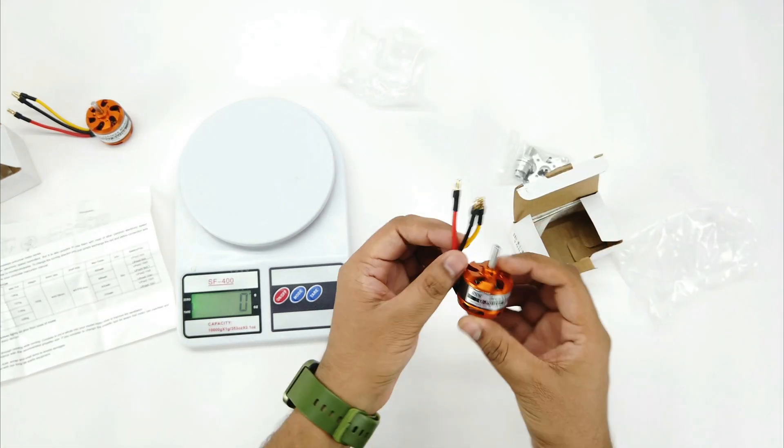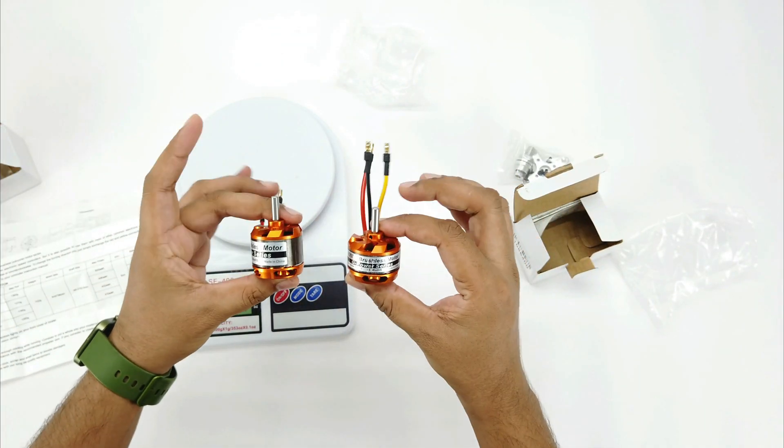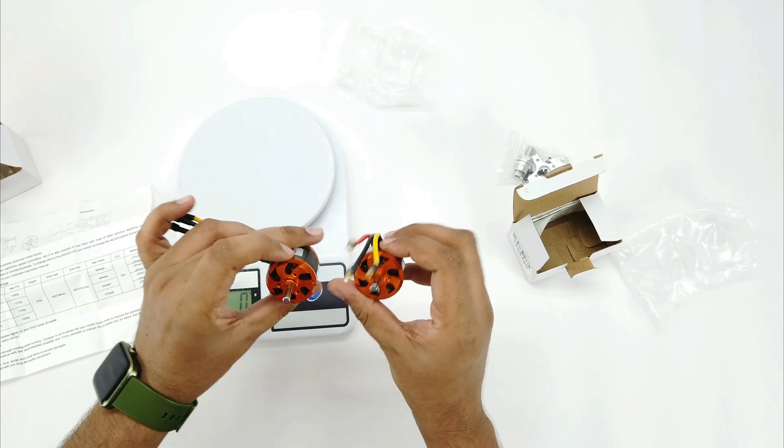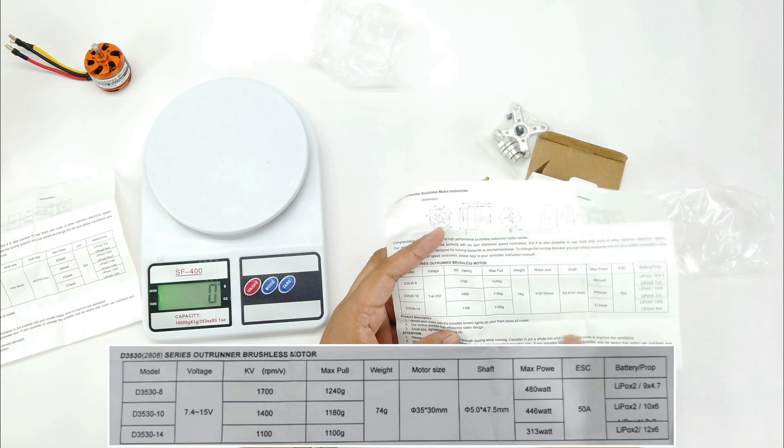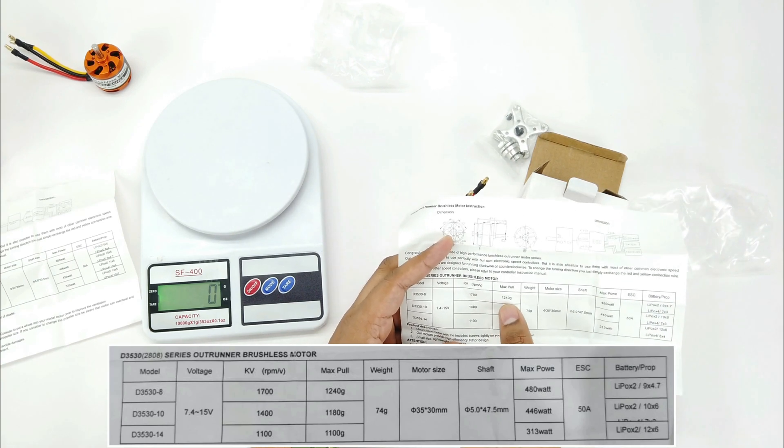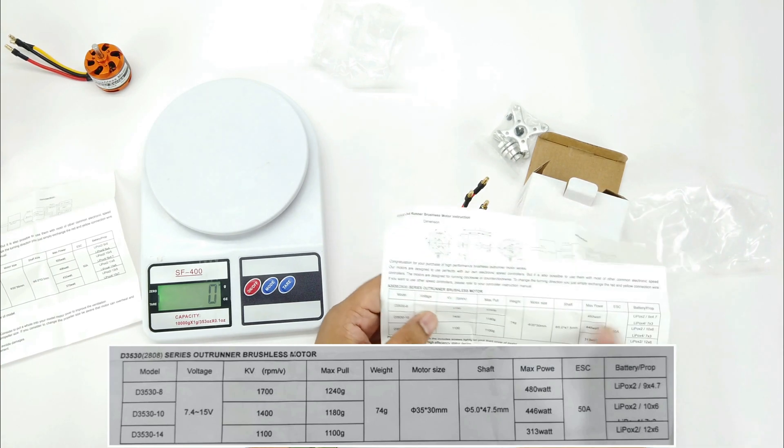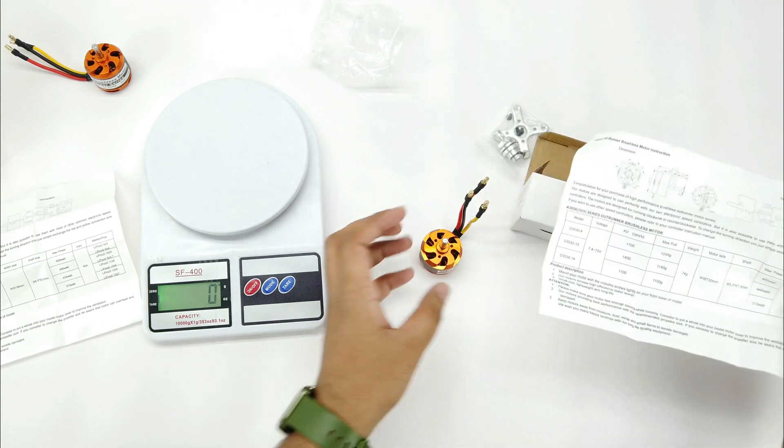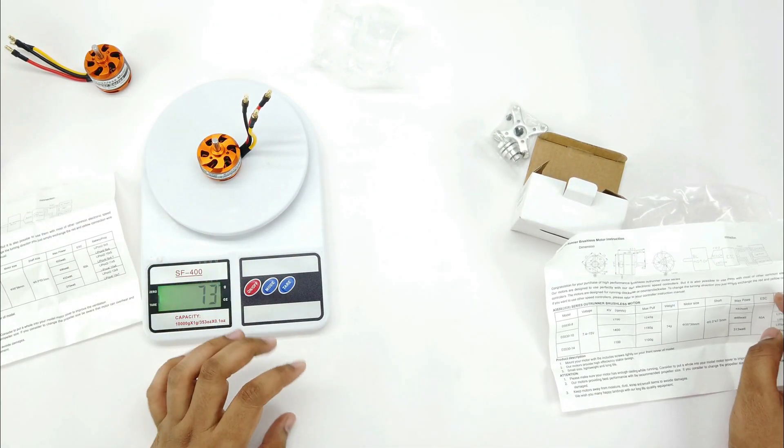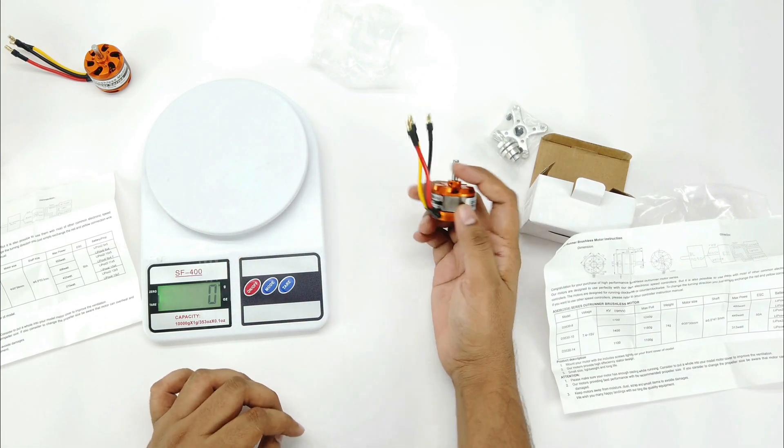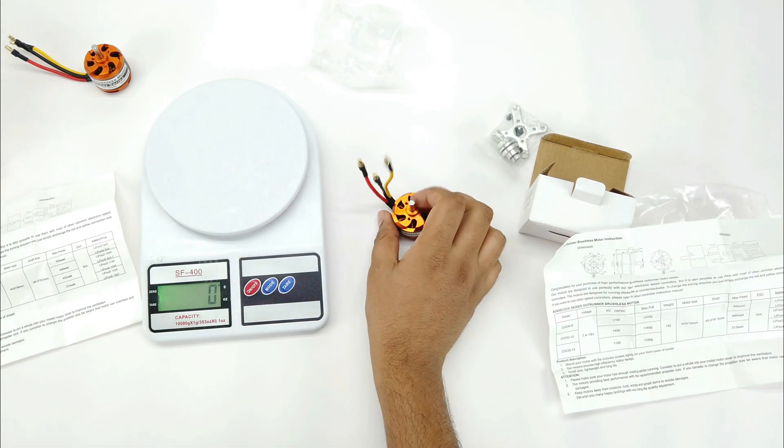And this 1700kV motor is comparatively small, actually small in length only. However, the diameters are same. As per the chart, the 1700kV motor gives a thrust of 1240 grams and its weight is mentioned 74 grams. Approximately it is correct. This motor costed me around 1350 INR, that's approximately $17.